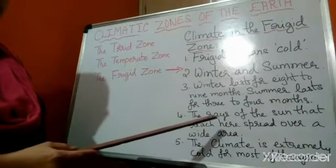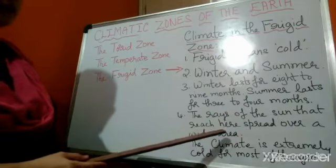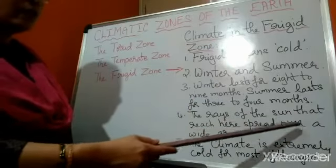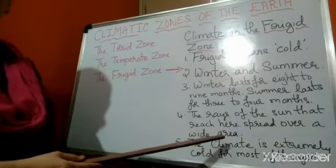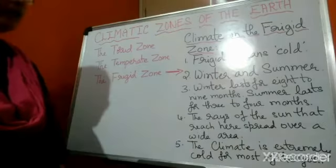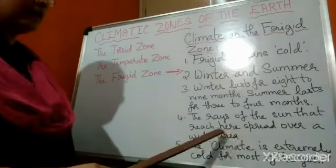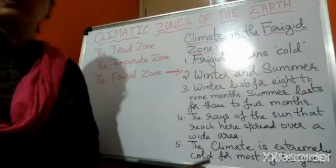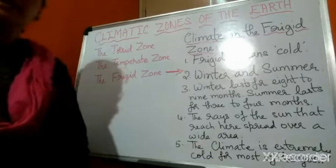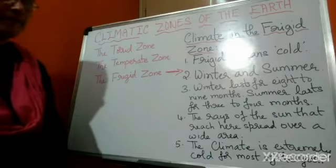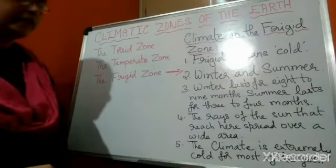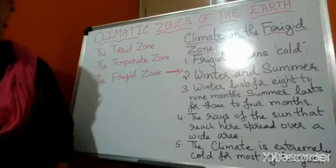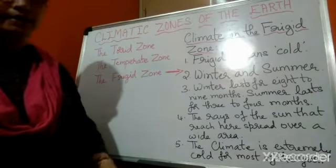The rays of the sun that reach the frigid zone spread over a wide area. Because of this, we receive less sunlight. The climate is extremely cold for most of the year.